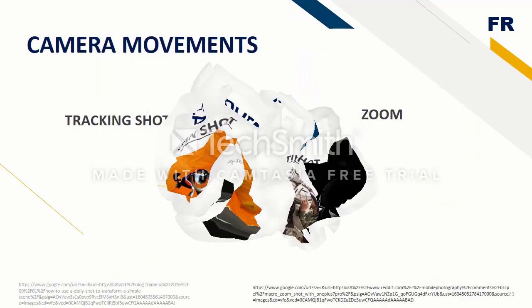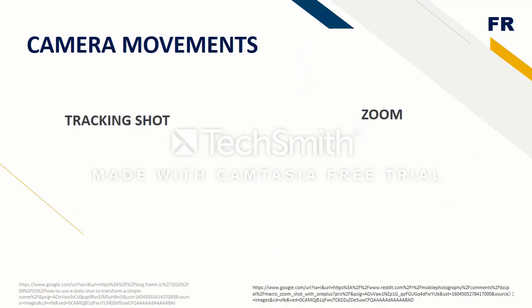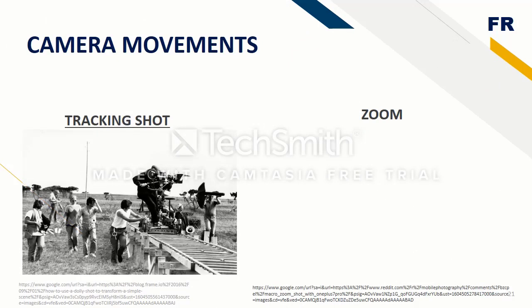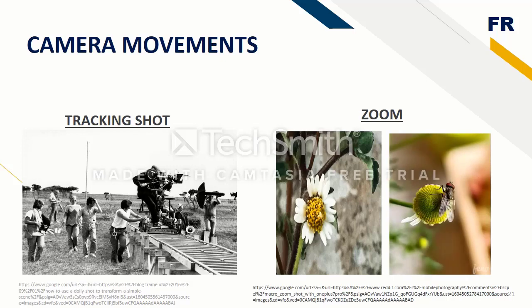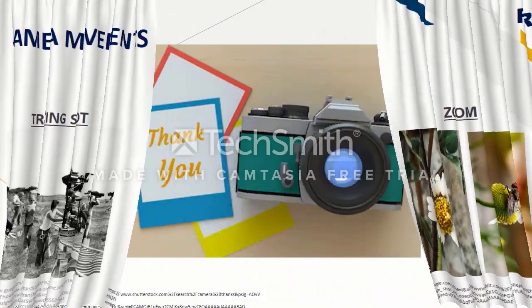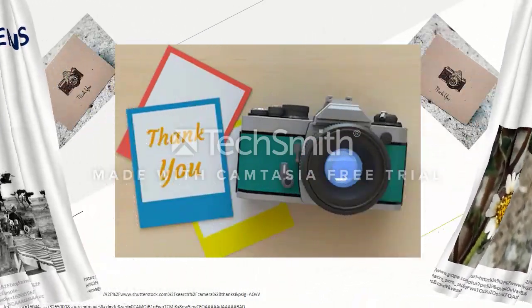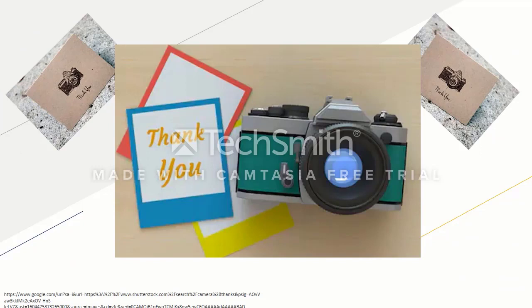The tracking shot is typically any shot that has physical movement, where the camera moves through the scene for an extended amount of time. The zoom shot is where the focal length of the camera lens is adjusted to give the illusion of moving closer or further away from the subject. And that's all — thank you for listening and thank you for today.